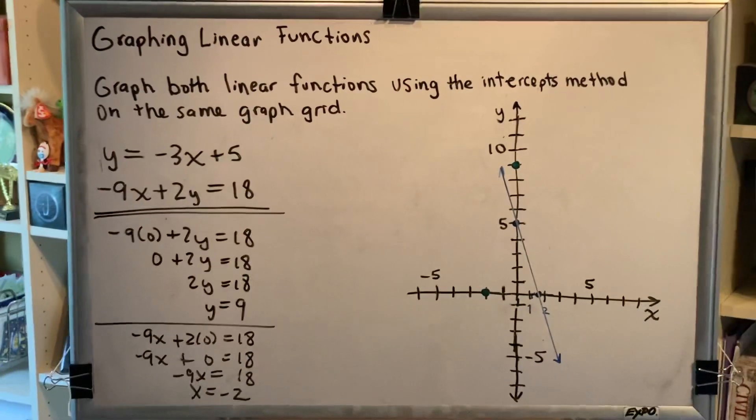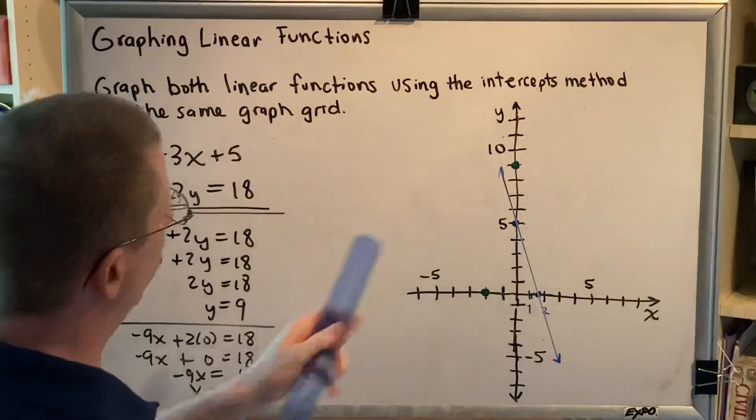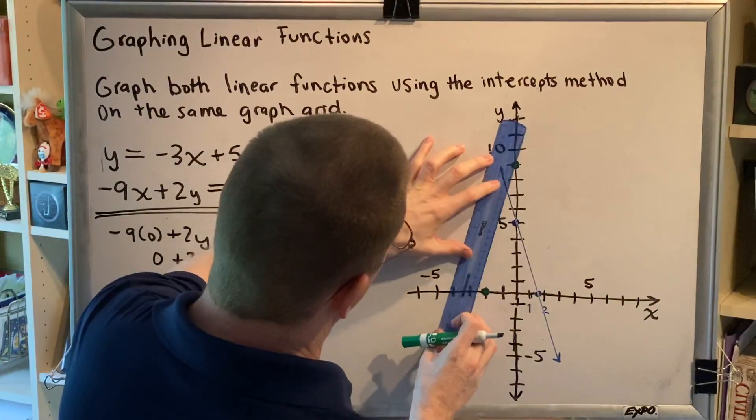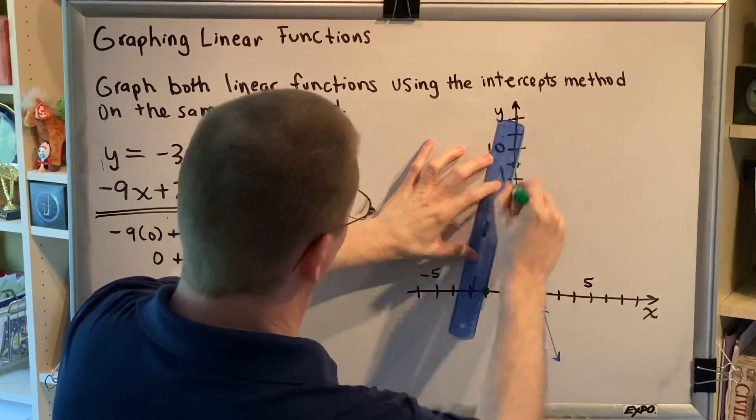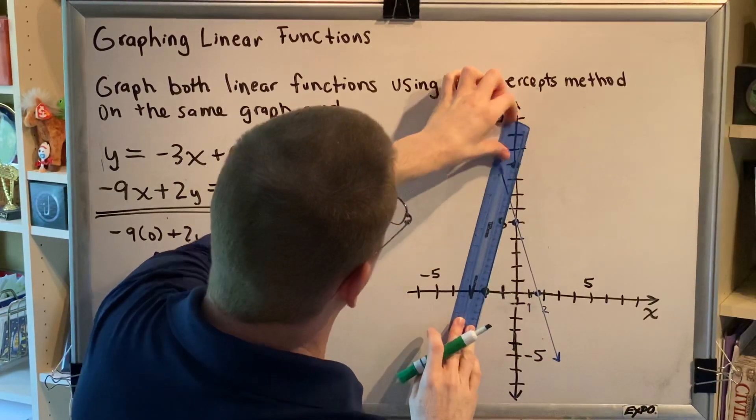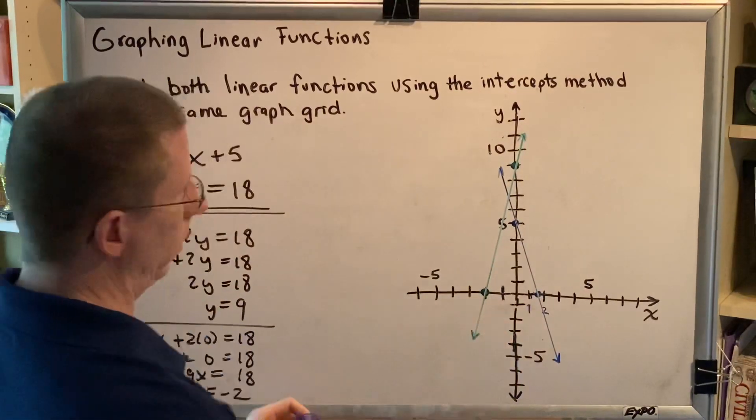Now that we have both of our points, we use our straight edge to connect them. And this gives us the equation, excuse me, the graph of our second line.